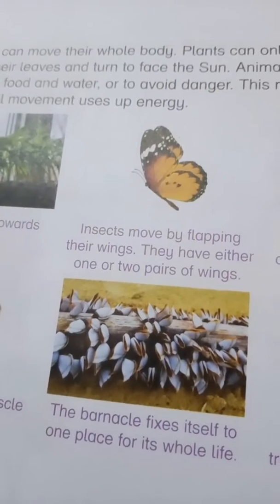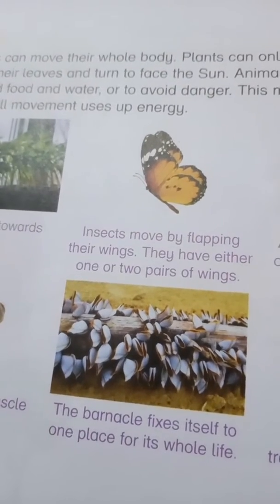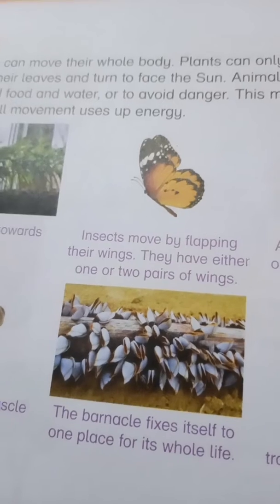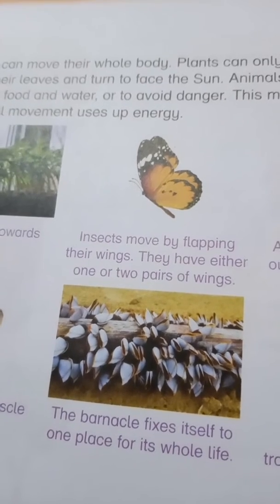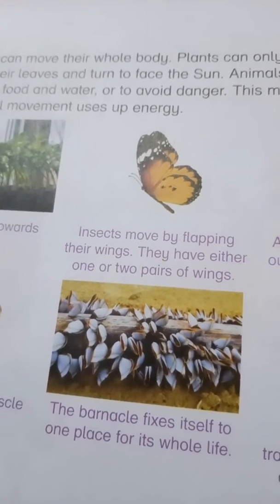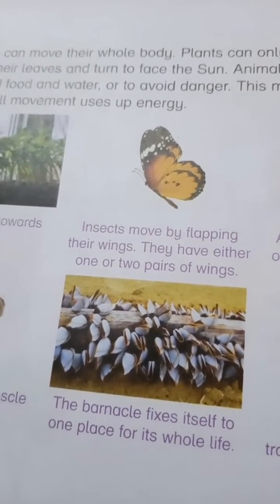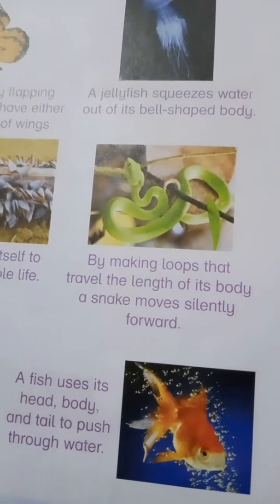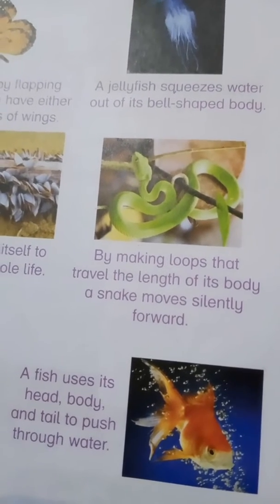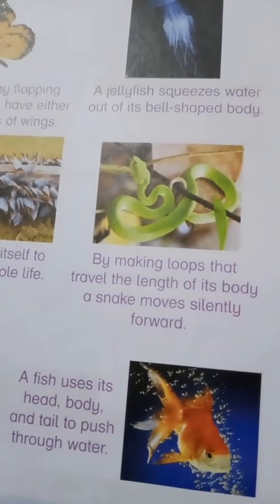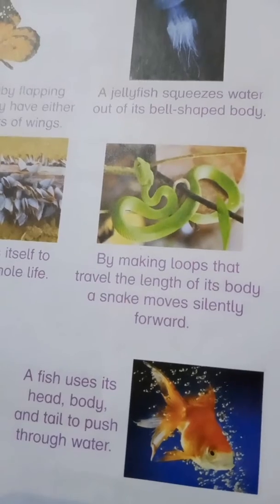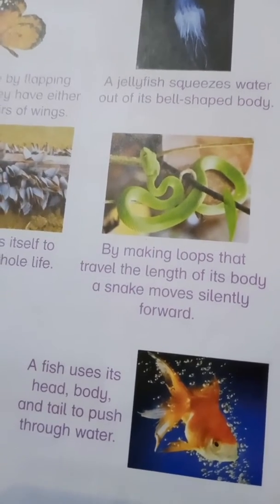For example, insects move by flapping their wings. They have either one or two pairs of wings. By making loops that travel the length of its body, a snake moves silently forward.